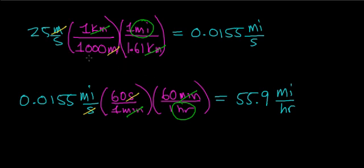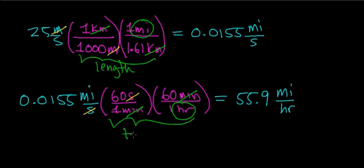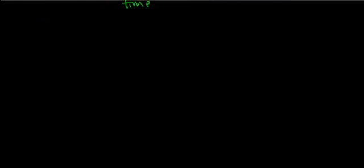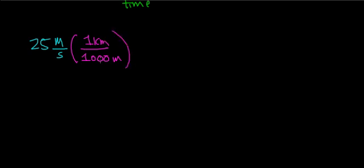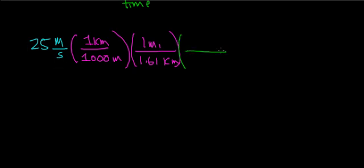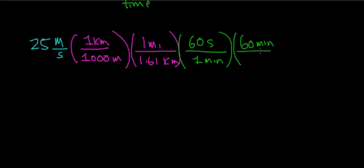Now I can do all of this in one step. Notice I did the length conversion and then the time conversion separately before. As you get really good at these problems, you can do the whole calculation in one step. Converting 25 meters per second: first 1,000 meters equals 1 kilometer, then from kilometers to miles using 1.61 km = 1 mile, then 60 seconds per minute and 60 minutes per hour — giving the exact same answer of 55.9 miles per hour.